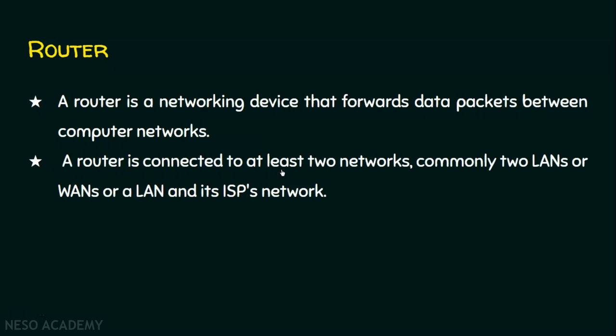A router is connected to at least two networks — commonly two local area networks, two wide area networks, or a local area network and its ISP's network. For example, in a small office with 50 computers, a switch alone is sufficient for internal communication. But if we want internet connectivity for all 50 computers, we need to establish communication from our local area network to the external network — the internet.